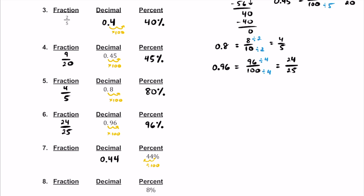So we're going to say that this is going to be 0.44. If we read this properly, this is 44 hundredths. So 0.44, or 44 hundredths, is going to be 44 over 100. If we divide top and bottom both by 4, we get the simplified fraction of 11 over 25. So that's the most simplified version.